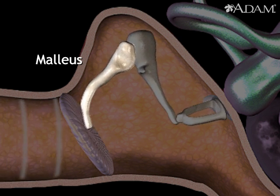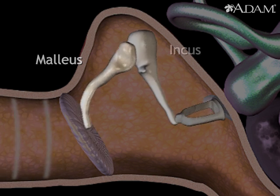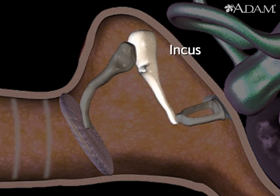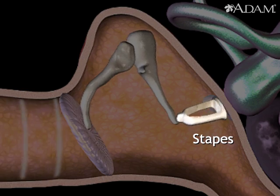Also called the hammer, it transmits sound vibrations to the incus, which passes them to the stapes. The stapes pushes in and out against the structure called the oval window.